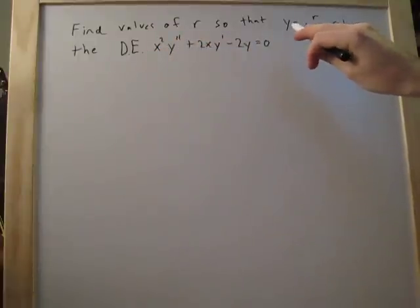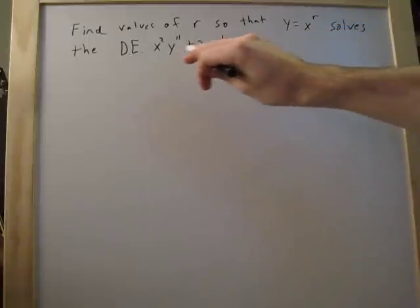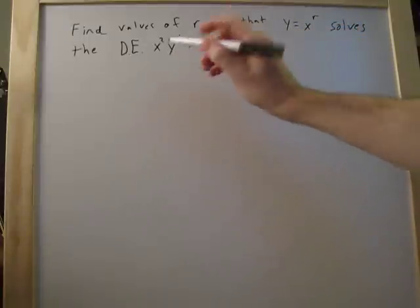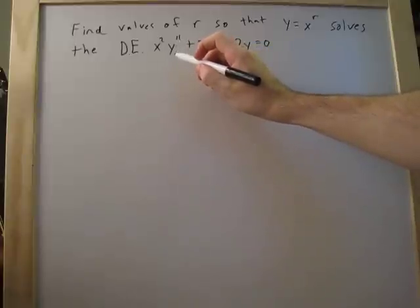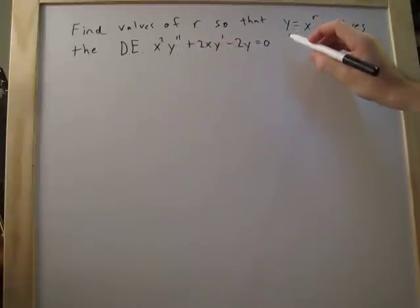So what we need to do is get these y's into forms that we can plug in here. Since we go up to y double prime, we need to get this y up to double prime as well.